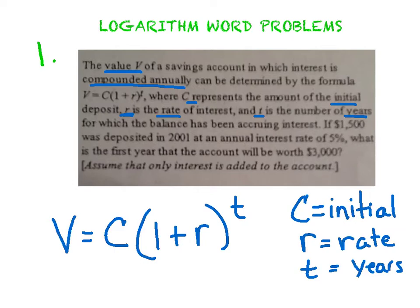If $1,500 was deposited, so if I put that much money in the bank, they're telling me that's what my C value is. In 2001, and an annual interest rate of 5%, so there's your R, what is the first year, so you're finding the year, you are finding the T value, that the account will be worth $3,000.